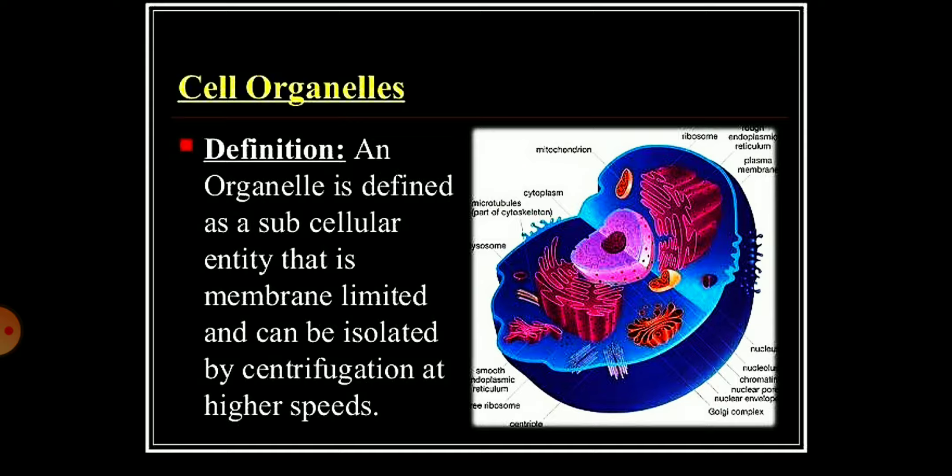Then what all are cell organelles? Like endoplasmic reticulum, you can see this from page number 63, 64, 65, 66. Here all the cell organelles, the important cell organelles are discussed like endoplasmic reticulum, golgi apparatus, lysosomes, mitochondria, plastids, vacuoles, all these things. Moving ahead, endoplasmic reticulum.